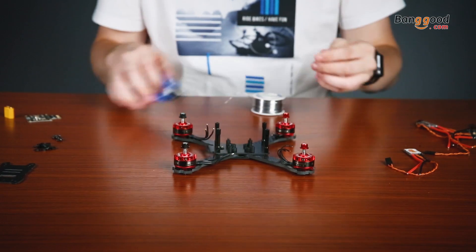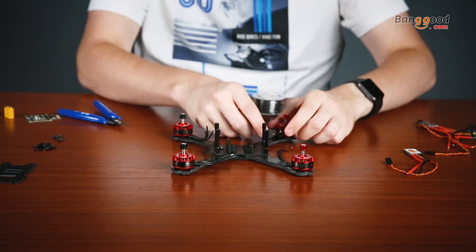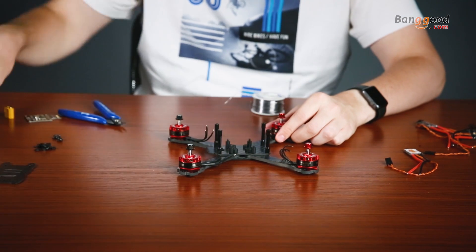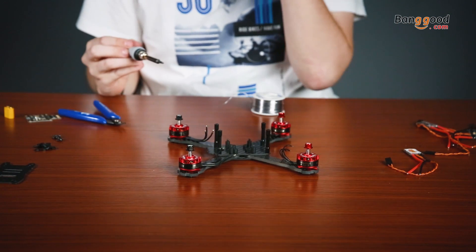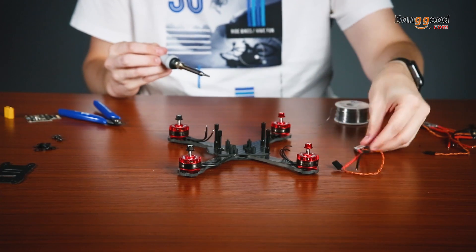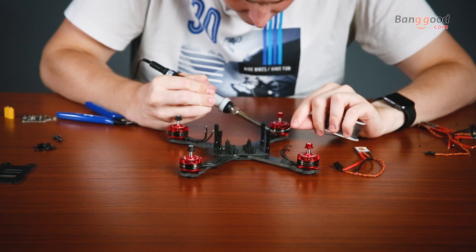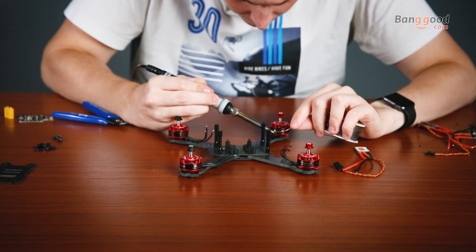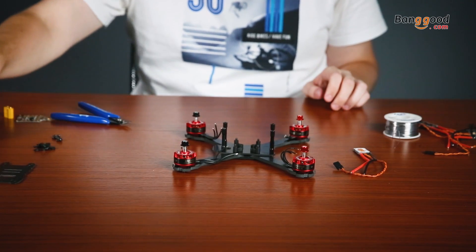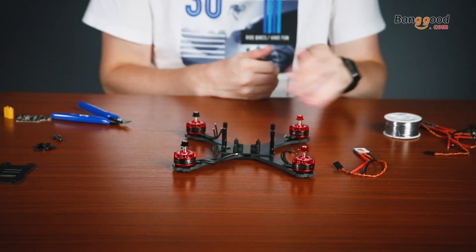That looks perfect. What I would always recommend is to put some pre-tinning - put some solder on it already which will make it much easier later to install it on your ESC. Try to do this very fast because you don't want too long to solder on it. Once you did that, let's do that with all the wires and then come back to install the ESCs.